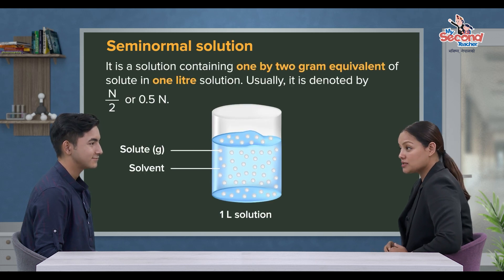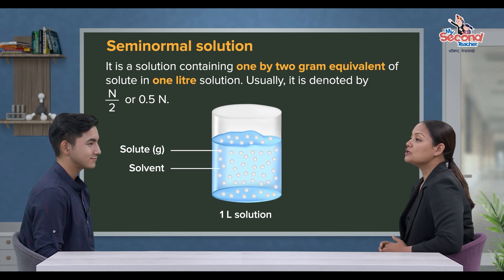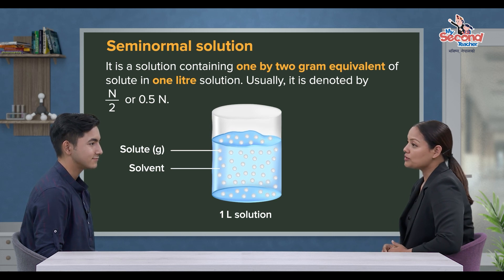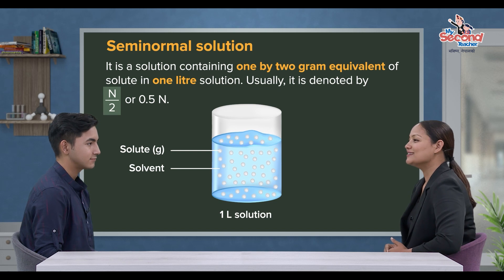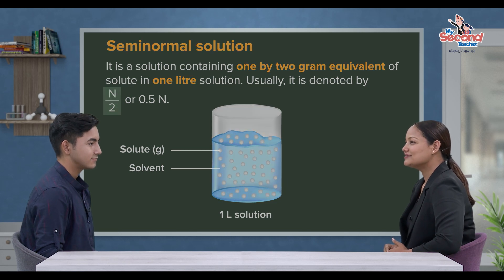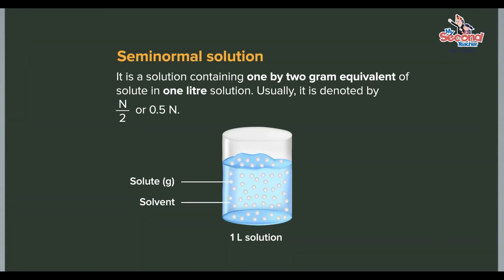If we have 1/2 gram equivalent of solute in a 1-liter solution, we put a normality unit of 2. In other words, a semi-normal solution is a solution containing 1/2 gram equivalent of solute in 1 liter solution. Usually, it is denoted by N/2 or 0.5N.